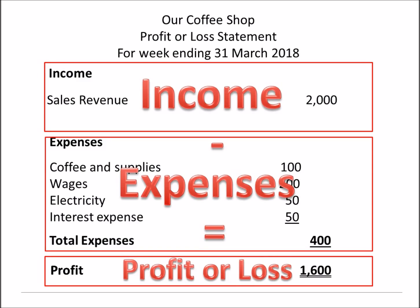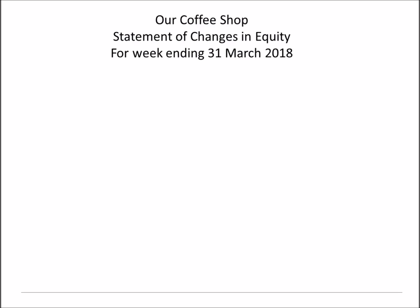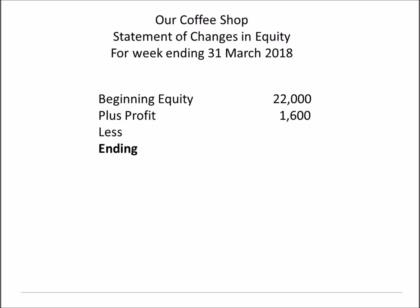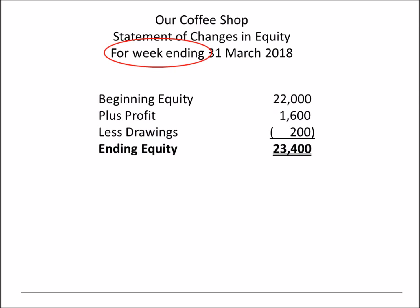We can now create a statement of changes in equity. Equity is increased by profit and decreased by loss and withdrawals of equity. Any statement that shows changes will have a beginning, additions and deductions, and an ending figure. Our beginning equity was $22,000 — we remember this from our balance sheet constructed at the start of the week. Profit increases equity and we just calculated $1,600 in profit. Let's also assume that we took $200 out of the business for our own personal use — this is called drawings. It's not an expense but rather a withdrawal of our equity. This leaves us with an ending equity of $23,400. Notice that this statement is labeled 'for the week ending' because it shows changes over a period of time.